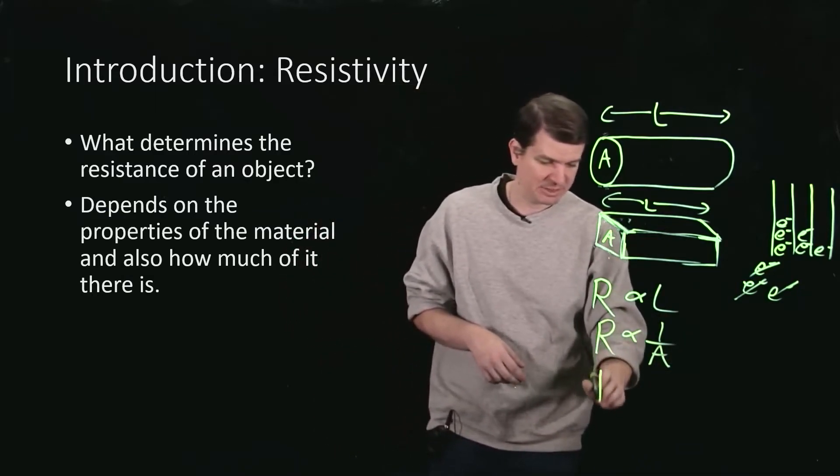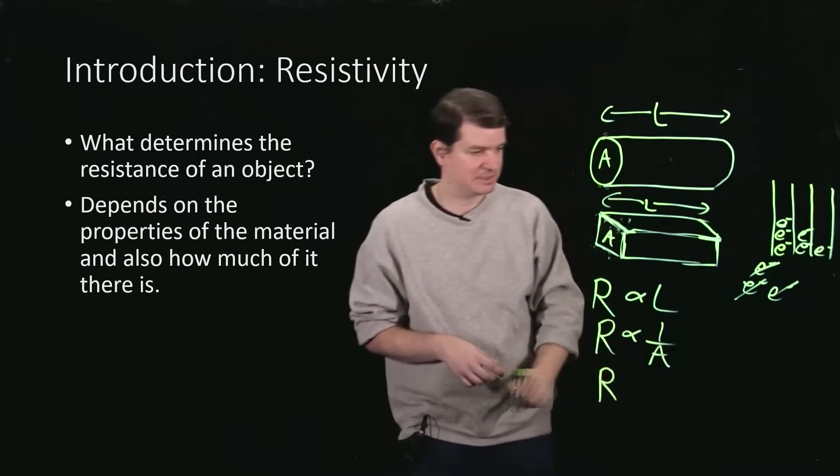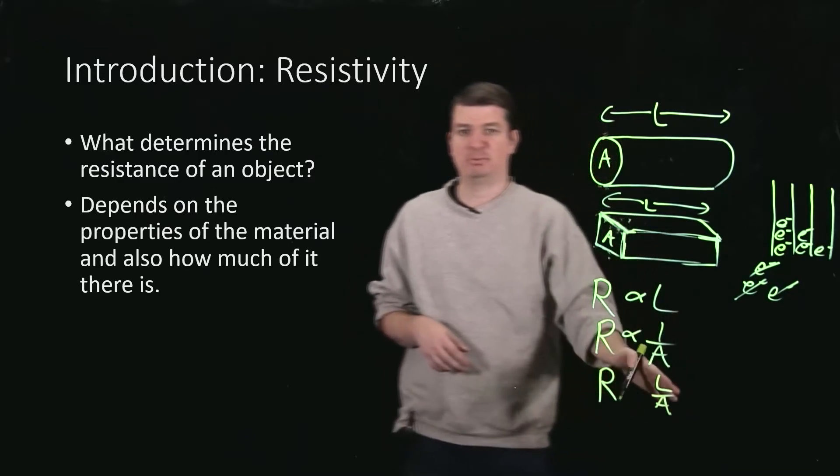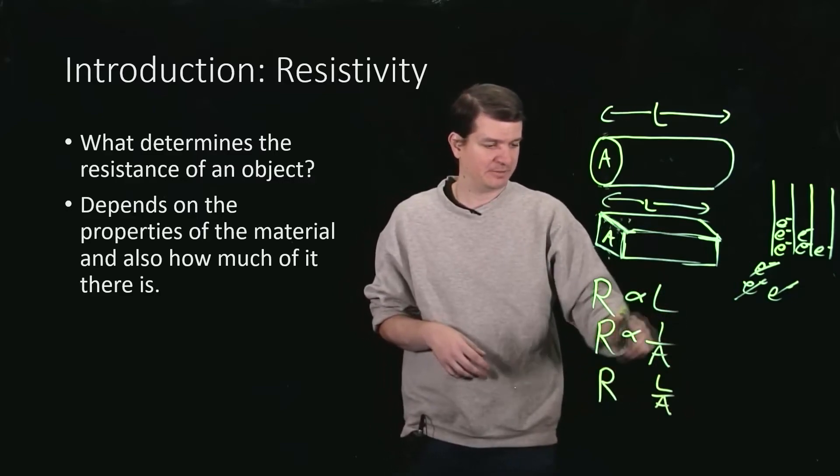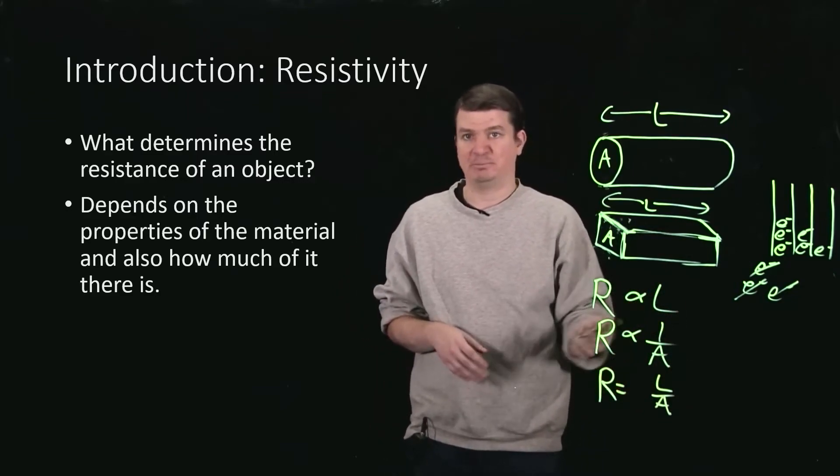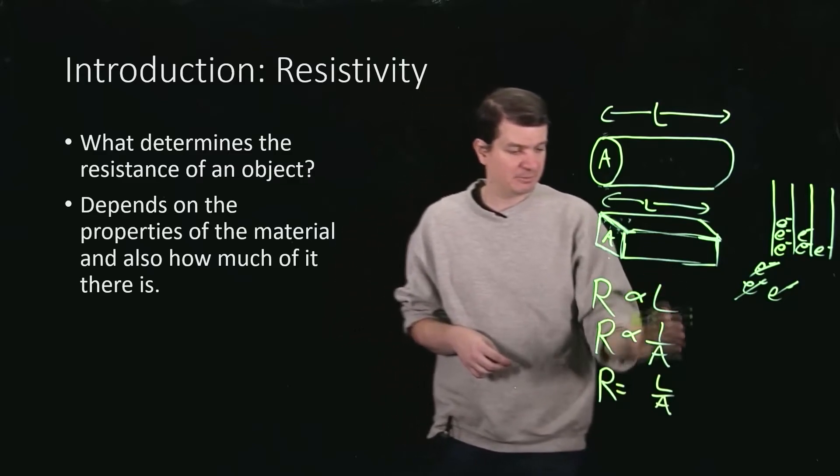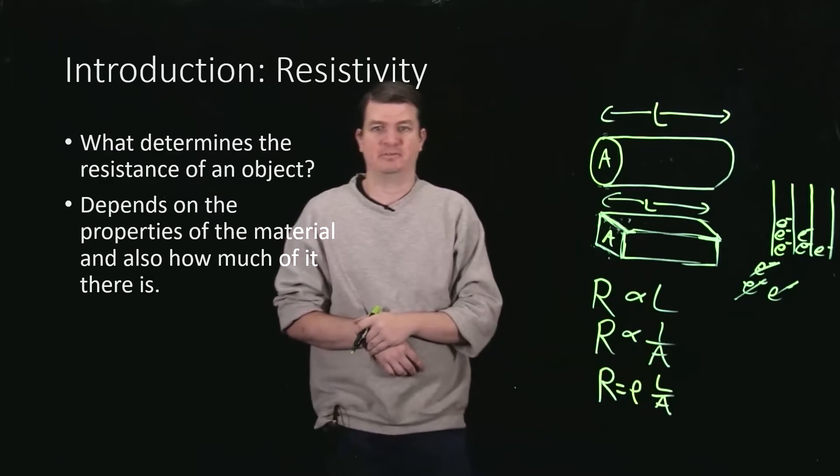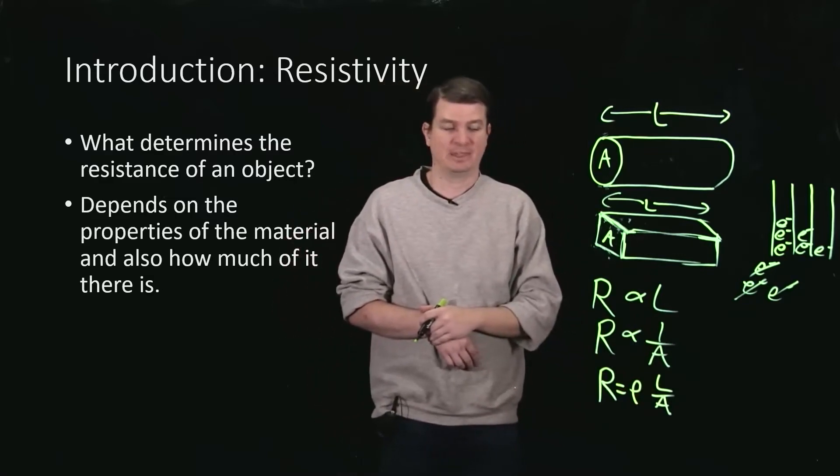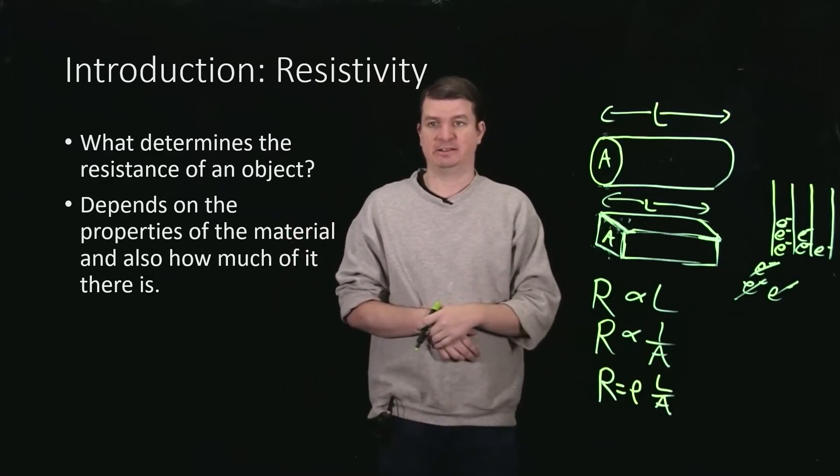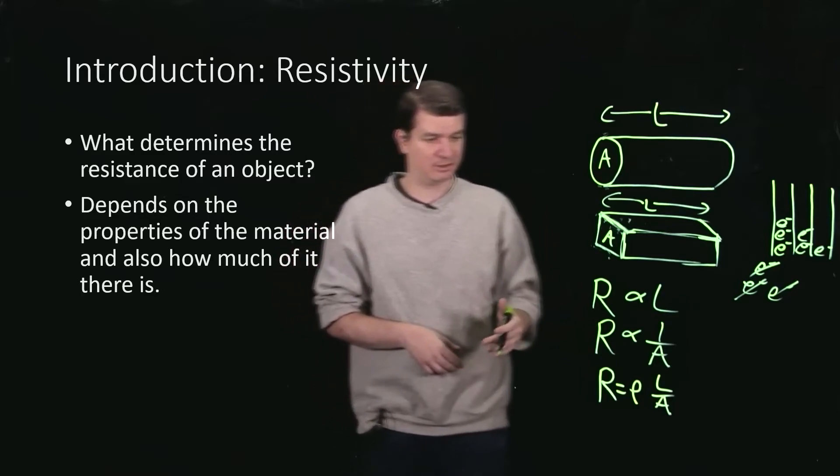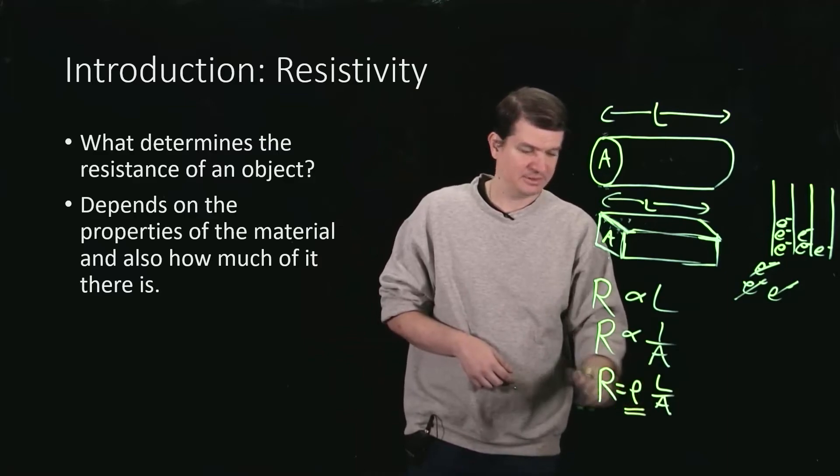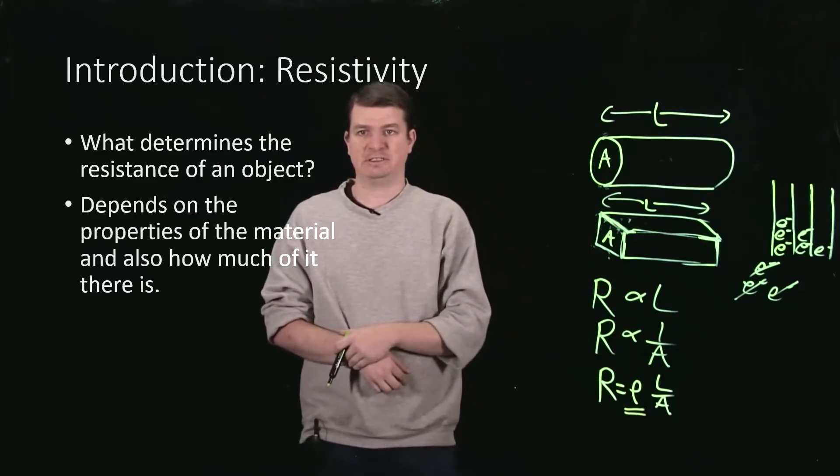And then we can complete this relationship by saying that really the resistance goes as L over A. It's supposed to be proportional to both. That's what we've already derived here. But then, or at least not derived, but motivated. But then we can also just assume some constant for the constant of proportionality. And that constant of proportionality is what we call the resistivity of the material. So that's this guy here. This rho is the resistivity.